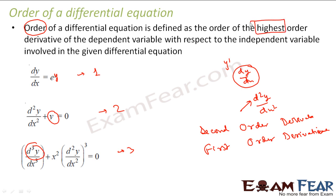Please note there is a term called 'highest' here — we have to find the highest. For example, if I have d²y/dx² and d³y/dx³, I am concerned only about the highest. So highest is d³y/dx³, and in this case the order will be 3.